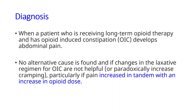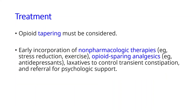and escalating the dose of the opioid results in paradoxical worsening of the abdominal pain. The treatment is opioid tapering, along with prevention of this side effect.